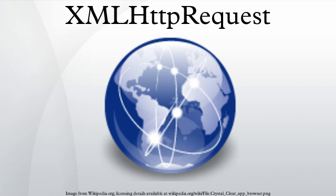XMLHttpRequest is an API available to web browser scripting languages such as JavaScript. It is used to send HTTP or HTTPS requests to a web server and load the server response data back into the script. Development versions of all major browsers support URI schemes beyond HTTP and HTTPS; in particular, blob URLs are supported. The name was standardized to XMLHttpRequest for compatibility, though it may be misleading, because any data may be received from the server — not just XML. Data are also commonly received as JSON, HTML, or as plain text.